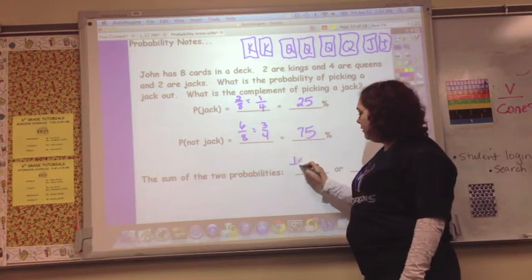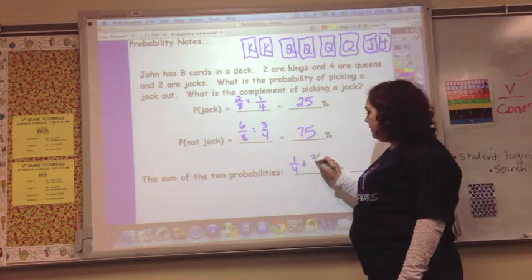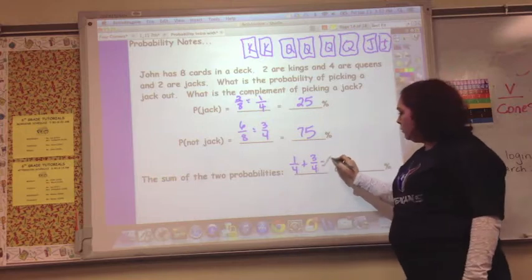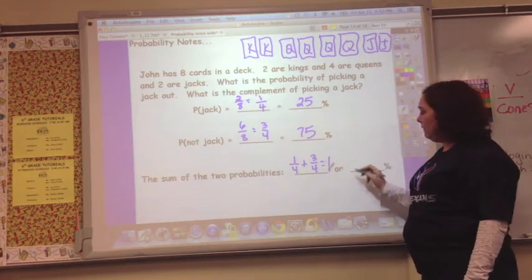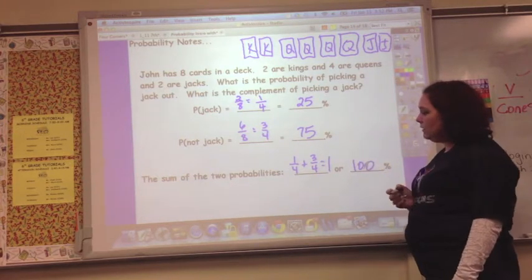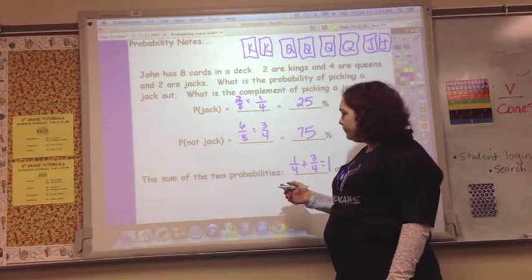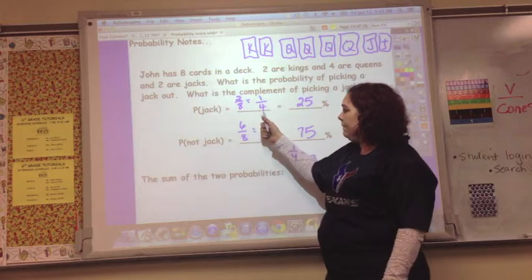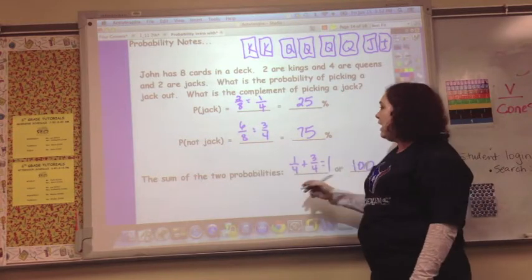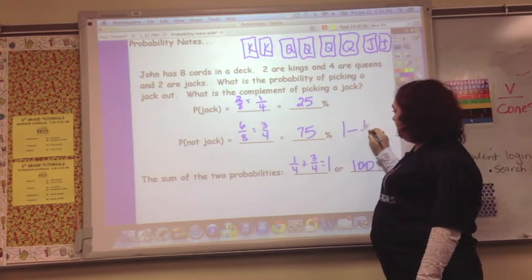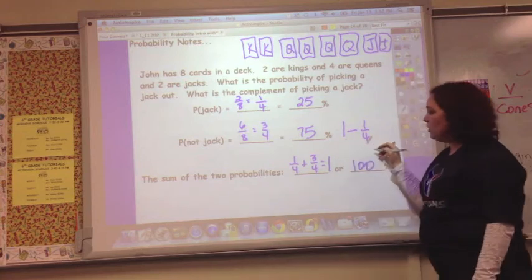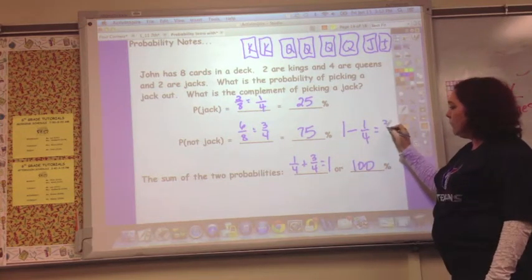Well, 1 fourth plus 3 fourths equals 1, or 25 plus 75 equals 100%. And you can also look at this as a jack is 1 fourth, and a not jack is 1 minus 1 fourth. That would be a not jack, and that equals 3 fourths.